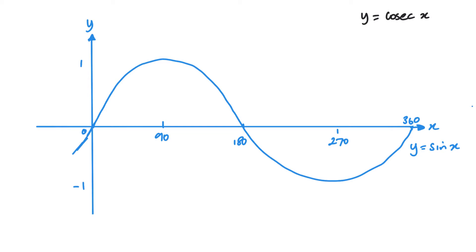So I know this is 1 over sin x. There's a few key points that I need to be aware of. Firstly, where sin x equals 0, as in at 180 degrees, 1 divided by 0, I can't do. So what that means is at that point, there is going to be no solutions that exist, so it's going to be an asymptote.